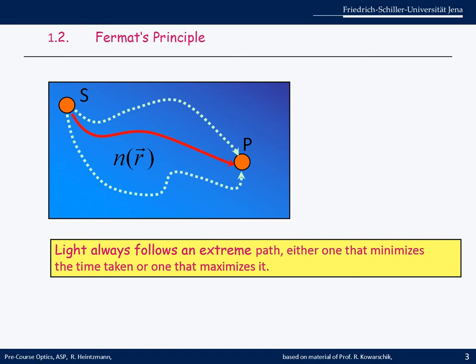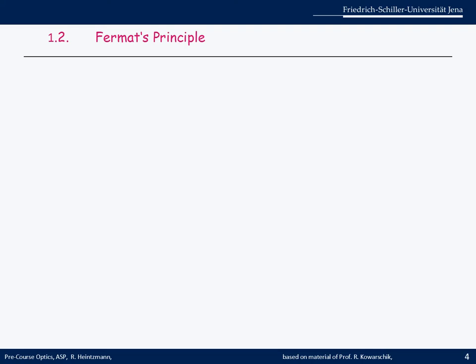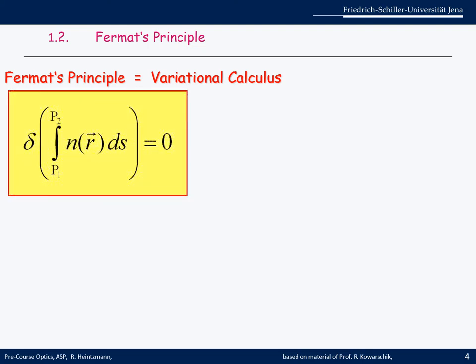Light always follows an extreme path, either one that minimizes the time taken or one that maximizes it. There's a mathematical version of Fermat's principle based on variational calculus. You calculate the first variation of the optical path length, defined by the integral over position s of n(r) ds from point one to point two. This variation needs to be zero, which explains how light actually travels.